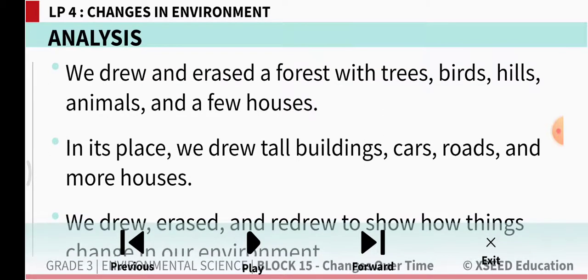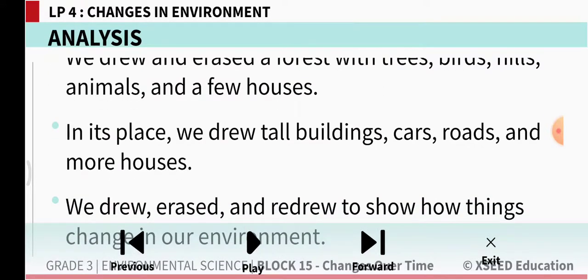We did this drawing activity to show how things have changed in our environment. In the beginning there were forests, open land, fresh air, animals and very few houses. But later people cut down the trees to build factories, buildings and to grow crops. Few animals are left, and now even the houses are built very close to each other.